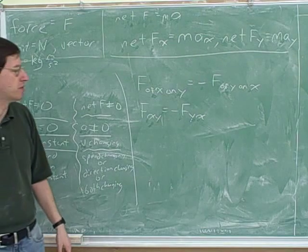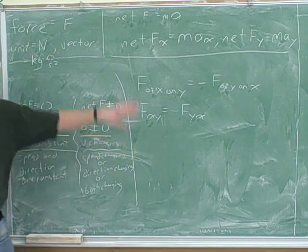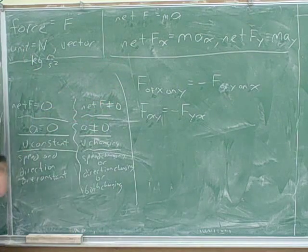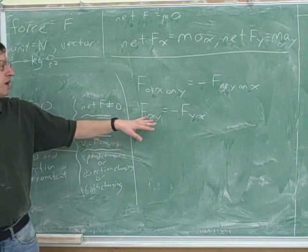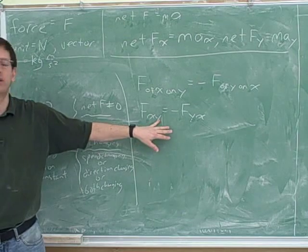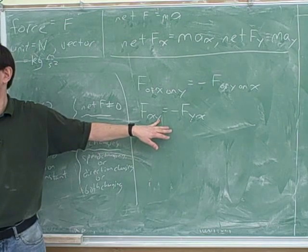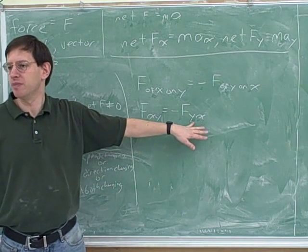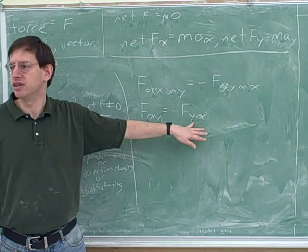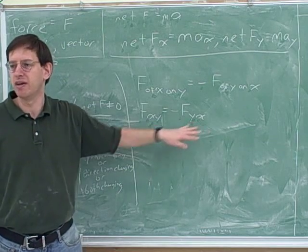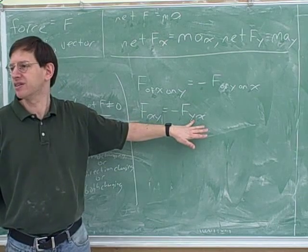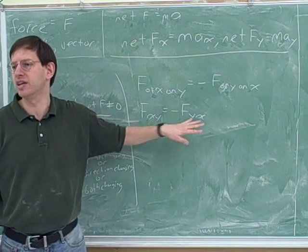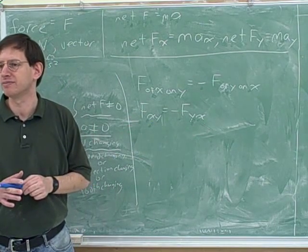That's a common mistake that people make with Newton's third law. So how do you use Newton's third law? What I really recommend is that you use the subscripts. Write down for one of the forces who's exerting it and who's feeling it, and then just reverse the subscripts. It's very easy to make a mistake if you don't do this mechanically. Figure out who x and y are for one of the forces, and then reverse those to find the other force — that will tell you the Newton's third law pair.